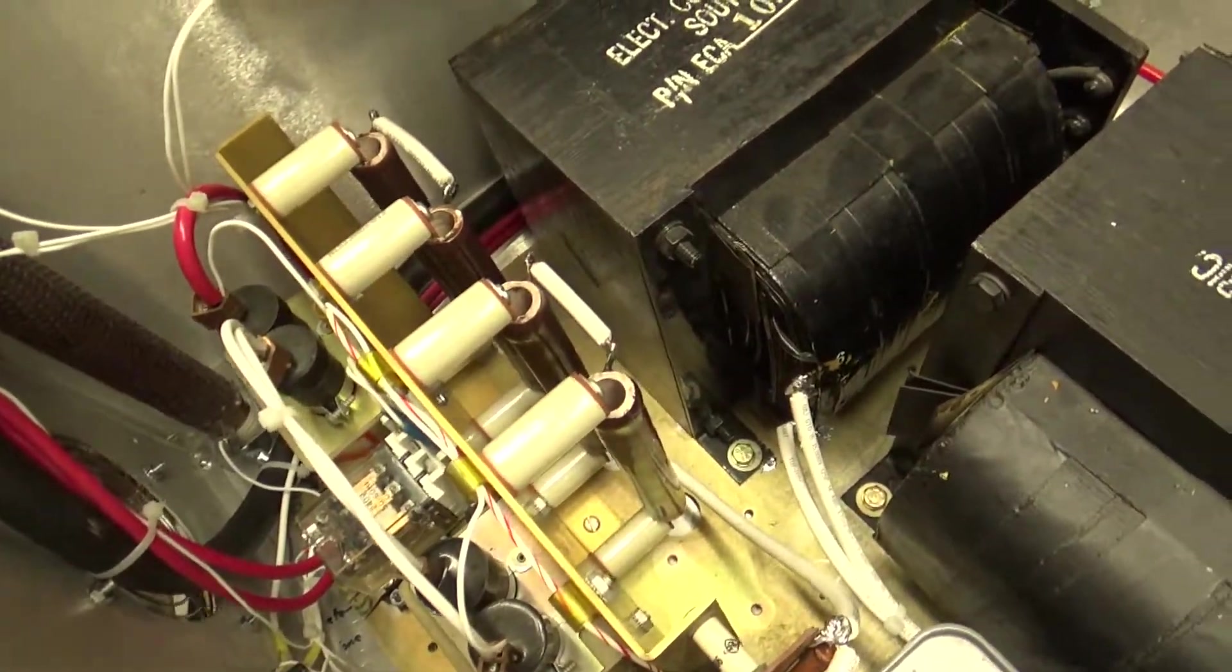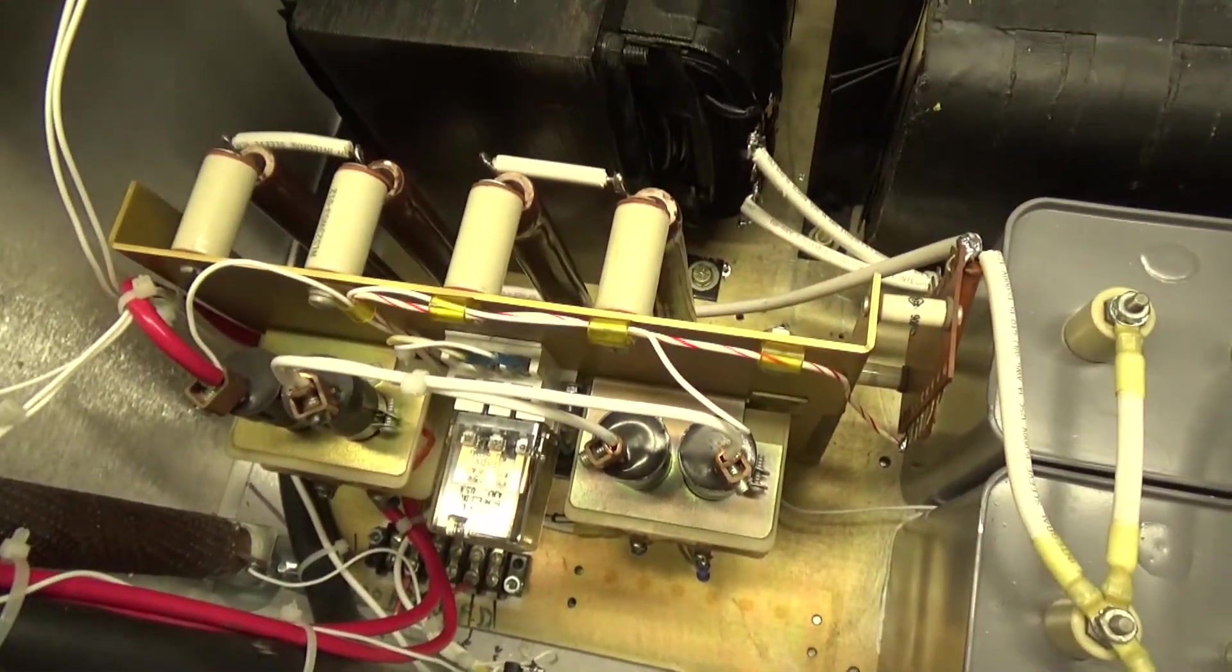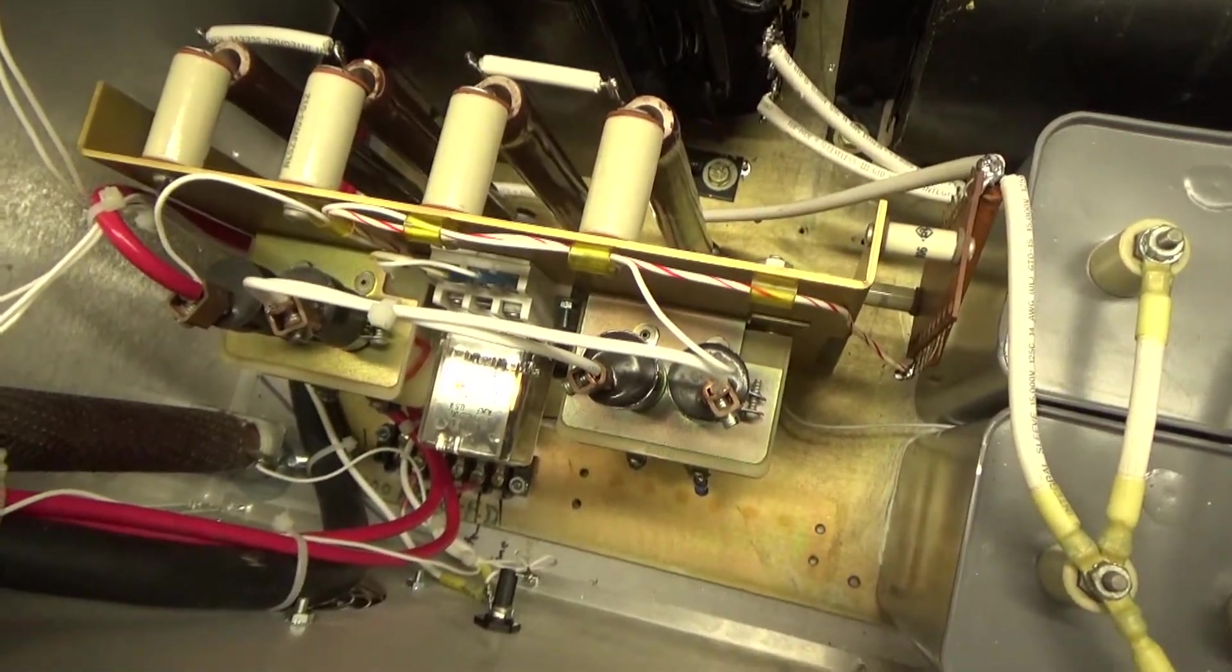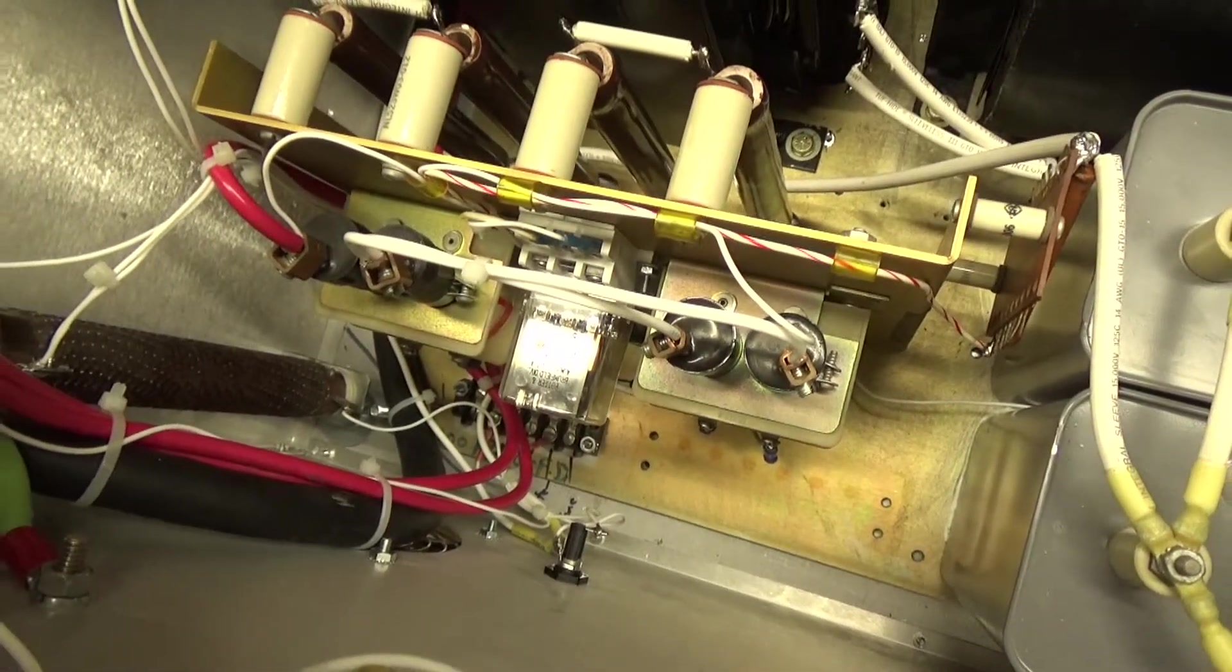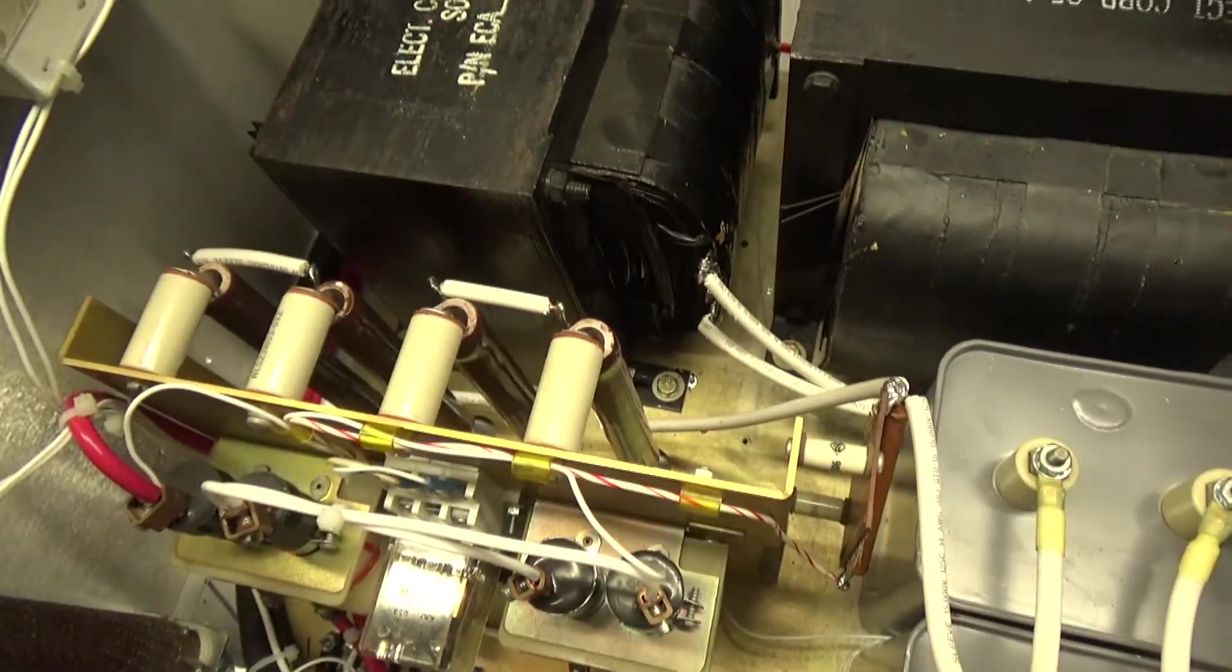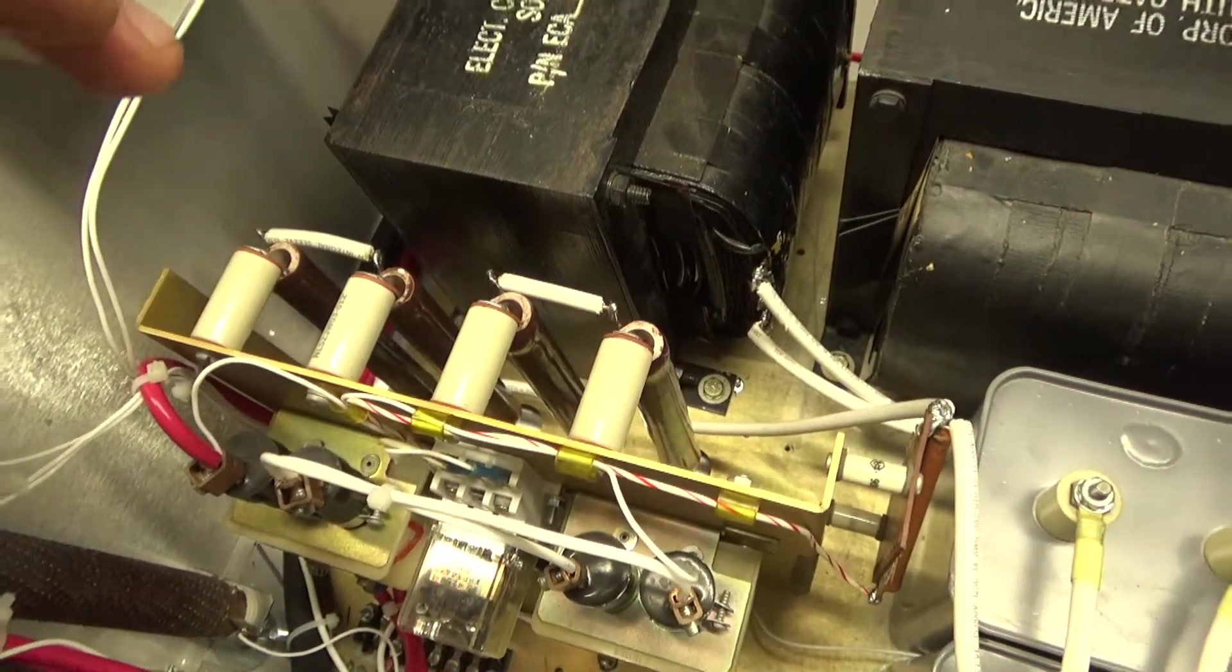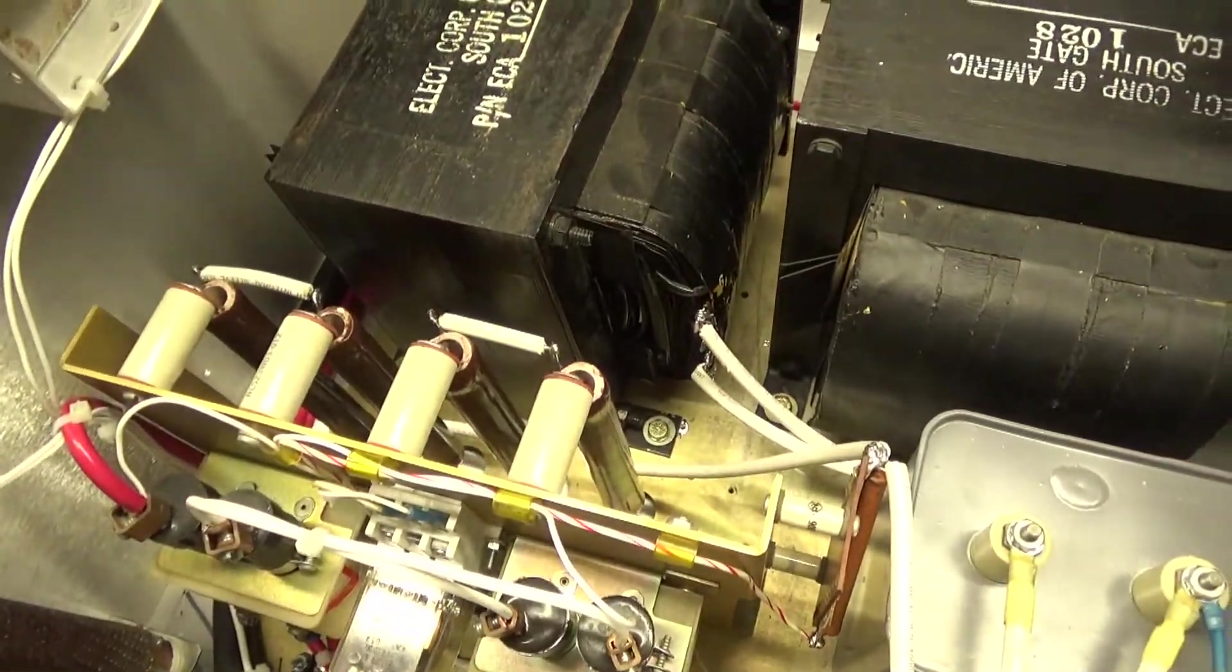So bleeder resistor values have been changed. Mercury contactors have been changed to ones rated for more current than the ones that were mounted to this bracket. So everything in here is different minus that transformer. I reused the bracket, repurposed the bracket, the plate, and one transformer.